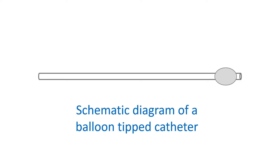Bedside cardiac catheterization can be done using special flow-directed catheters which have a balloon at the tip. When the balloon is inflated while in the right upper chamber of the heart (right atrium), the catheter takes the course of the blood flow into other chambers. This method is usually used to measure the blood pressure in the pulmonary artery.